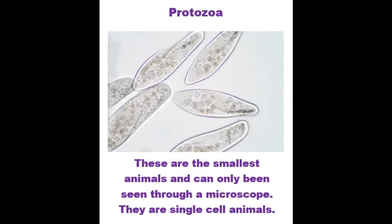These animals are single-celled, meaning that there's not lots of different parts to their body or their makeup, like us. They have only one single cell. So in your body, you have billions of cells and it's as if just one of them is an animal. Although there are lots of them, you have to have a microscope to be able to see them.